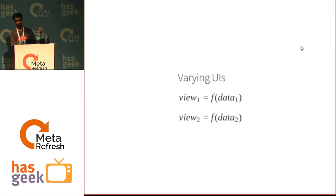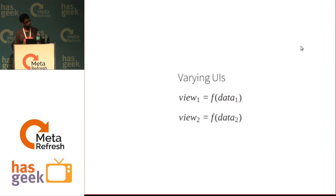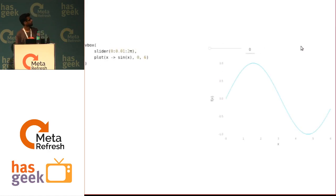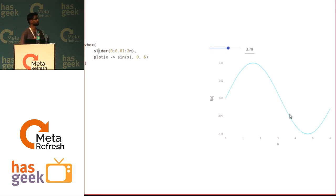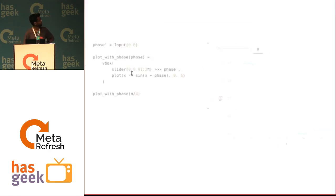This is all well and good — you can create static pages and static UIs. So how do you do UIs that update over time? What does it mean for a UI to update? It means that the data the UI depends on has changed. What I want to do here is connect a slider to a plot. When I move the slider, I want to set the phase of the sine curve using that plot. The slider goes from zero to two pi at steps of 0.1.